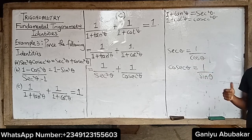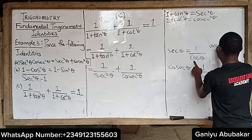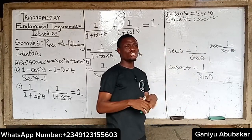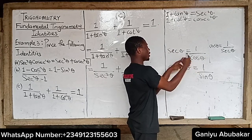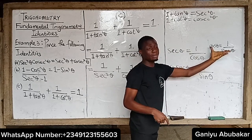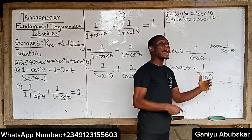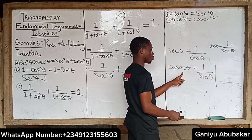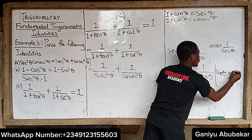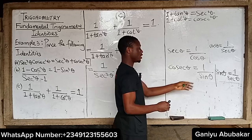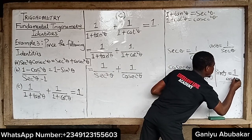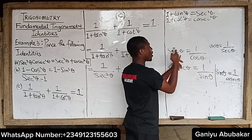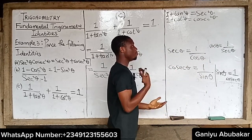Here's the key idea. Since sec theta equals one over cos theta, I can swap it so that cos theta equals one over sec theta. This is just mathematics — swap these two. So anywhere I see one over sec theta, I can replace it with cos theta. Similarly, swapping cosec theta gives sin theta equals one over cosec theta.